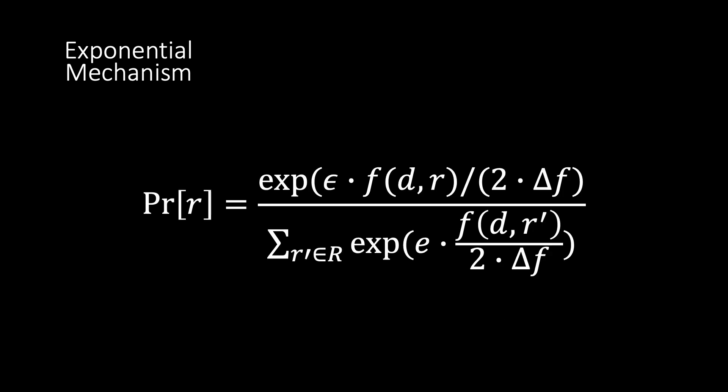In practice, it looks like this. For every possible outcome, the mechanism computes probabilities for selecting this outcome based on its score. This probability looks like this mathematical monster here, and the only important thing is that it depends on the sensitivity, delta F, and the privacy parameter, epsilon.